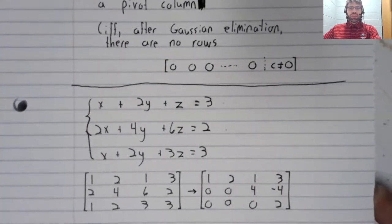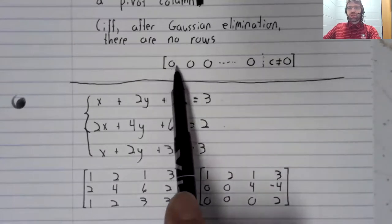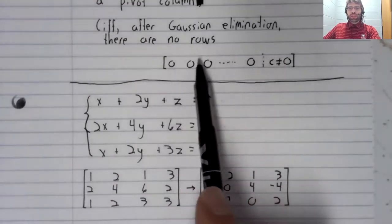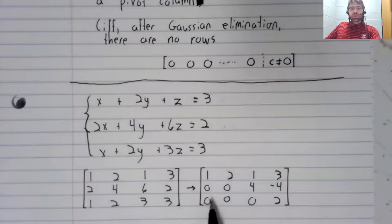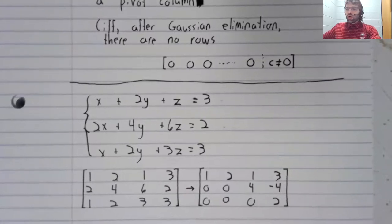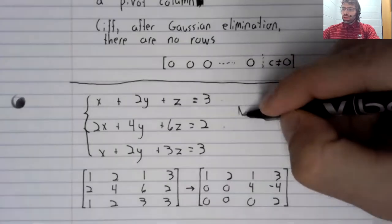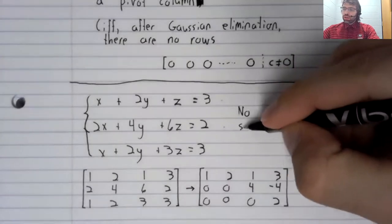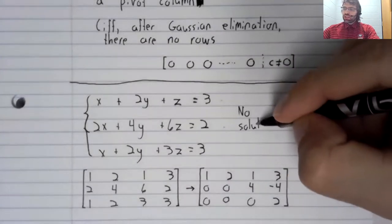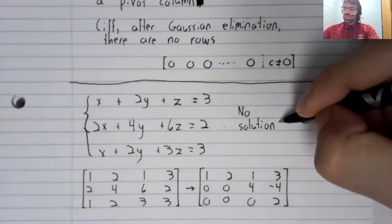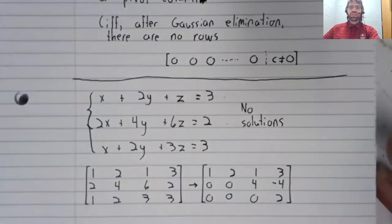And you see that we do have a row like this. This third row here is all zeros, except for the last element. And according to our theorem, that means that the system is inconsistent.